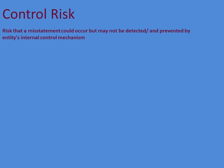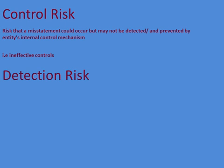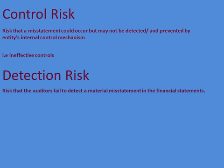What is control risk? It is the risk that a misstatement could occur but may not be detected and prevented by the entity's internal control mechanism — that is, ineffective controls. Though controls are in place, they are not effective. What is detection risk? This is ineffective audit — the risk that auditors fail to detect a material misstatement in the financial statement.